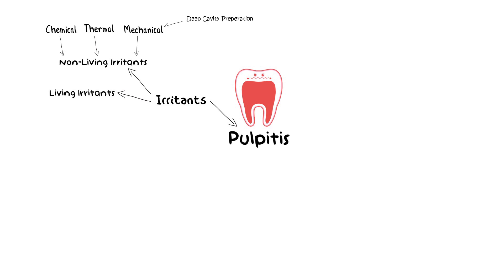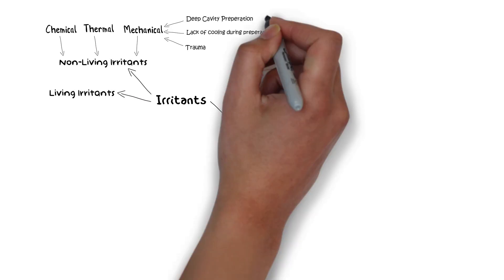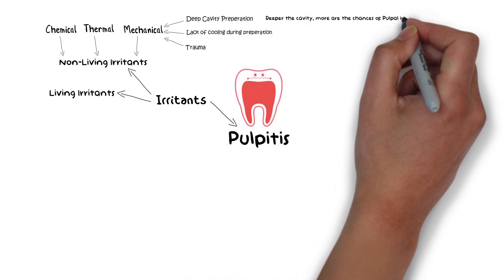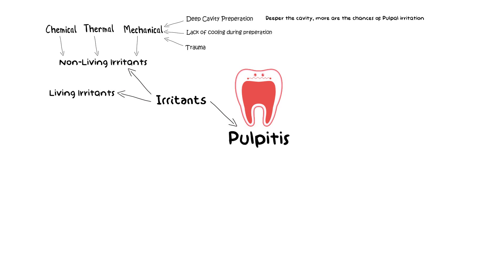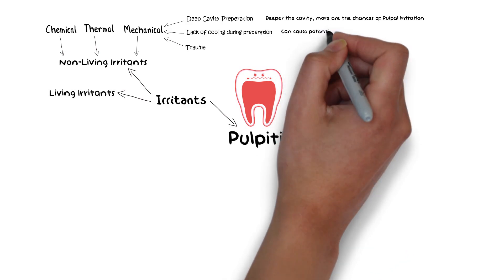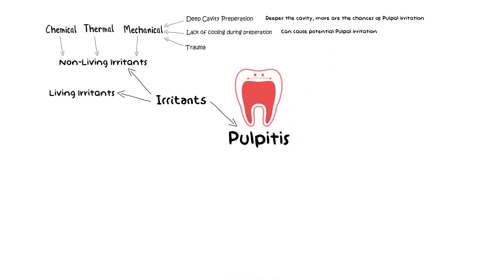Mechanical irritants such as deep cavity preparation, tooth structure removal without cooling, and trauma can all lead to changes in the underlying pulp. As more pulp is removed during cavity preparation, more potential for damage is increased as the dentinal tubules become larger near the pulp. Similarly, operative procedures without water spray or coolant can cause irritation to the pulp and hence can elicit an inflammatory response.